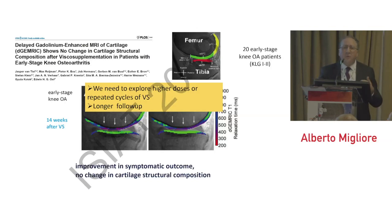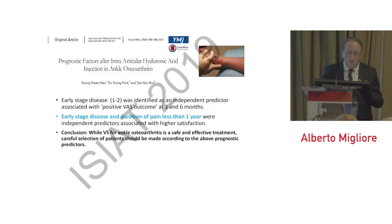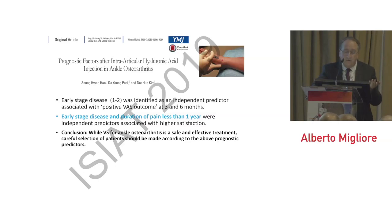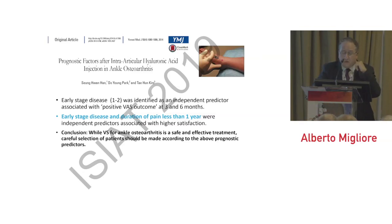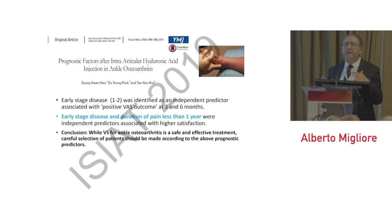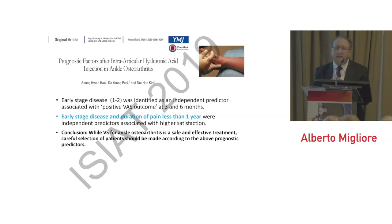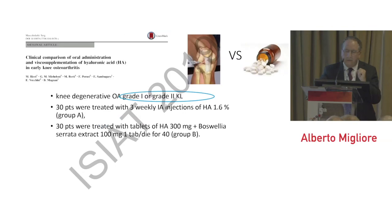Looking at papers on predictor factors for the effectiveness of intra-articular hyaluronic acid, early stage disease and duration of pain less than one year were independent predictors associated with higher patient satisfaction. If we investigate these kinds of predictors for each treatment — steroids, hyaluronic acid, stem cells, PRP — we can better determine the right time for treatment.